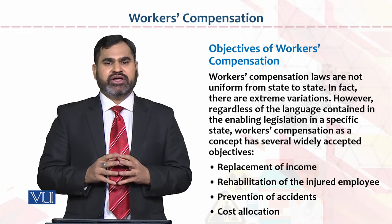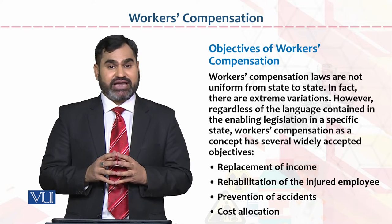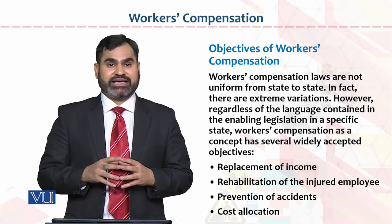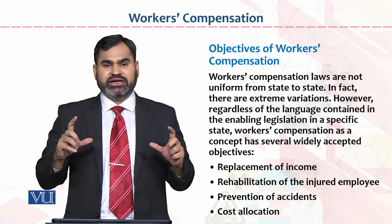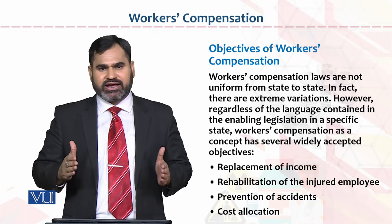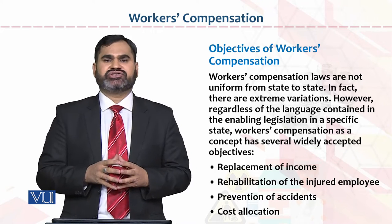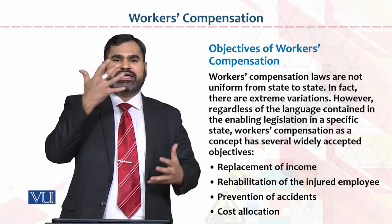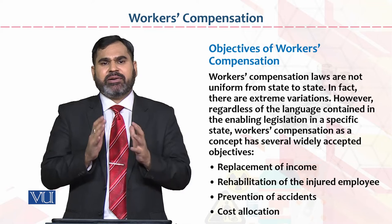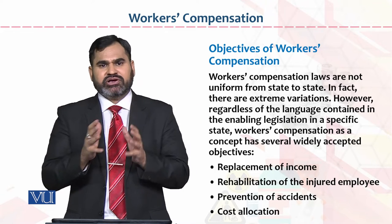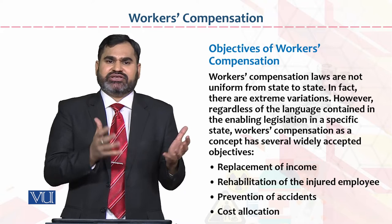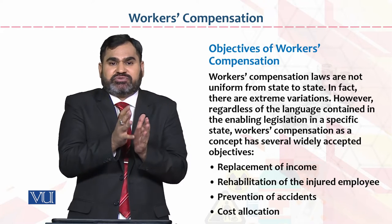However, regardless of the legislation and the language contained in the enabling legislation in a specific state, workers' compensation as a concept has several widely accepted objectives. There may be little variation, but the common objectives across all states are the same. Number one: replacement of income — the continuous income the person was earning should be replaced. Number two: rehabilitation of the injured employee — bringing them back to the same position. Number three: prevention of accidents — taking measures so such accidents don't happen again. Number four: cost allocation — the total cost of producing within the organization will increase from the employer's side.